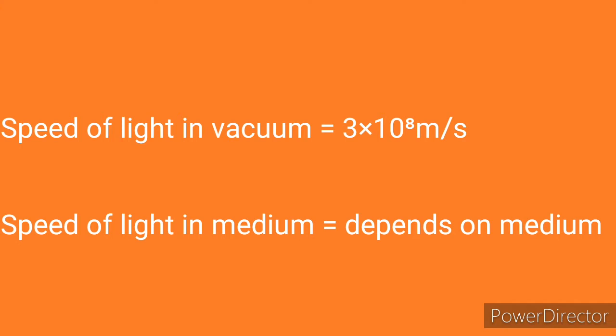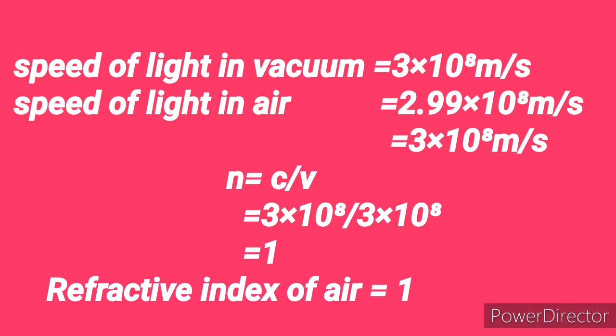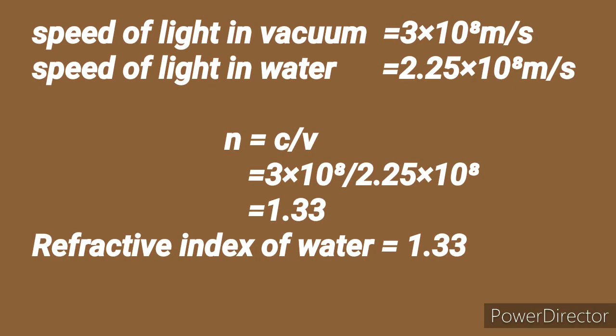The speed of light in vacuum is 3 × 10⁸ m/s. The speed of light in a medium depends on the medium. For example, the speed of light in air is 2.99 × 10⁸ m/s. To find the refractive index of air, substitute these values into the formula: c = 3 × 10⁸ m/s and v = 2.99 × 10⁸ m/s, which is approximately equal to 3 × 10⁸ m/s. Substituting into the formula, we get the refractive index of air as 1.